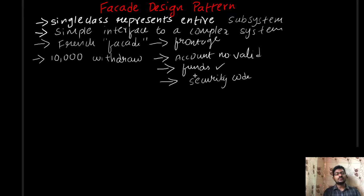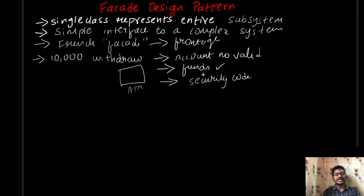If you are satisfied with all these things, you can withdraw 10,000. If you have a simplified interface — like going to an ATM — you can simply request a 10,000 withdrawal. The ATM validates your account number, checks your security code, verifies it is valid, and finally you get your 10,000. This is the facade design pattern.